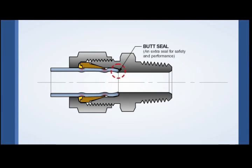The butt seal is a unique GyroLock feature. In addition to the front ferrule seal against the fitting body, the butt seal provides a second level of protection against external leaks. Two seals are better than one.